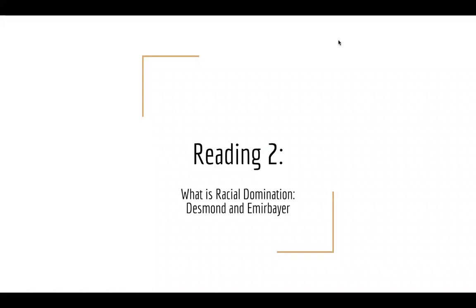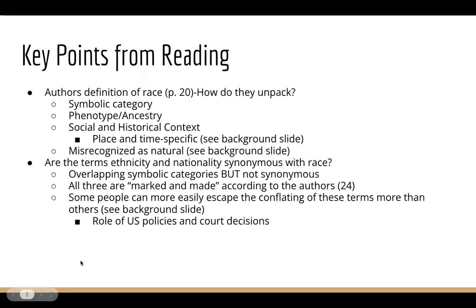This video is for reading number two, which is entitled 'What is Racial Domination?' The authors begin with their definition of race, which on page 20 reads: we define race as a symbolic category based on phenotype or ancestry and constructed according to specific social and historical context — that is misrecognized as a natural category.